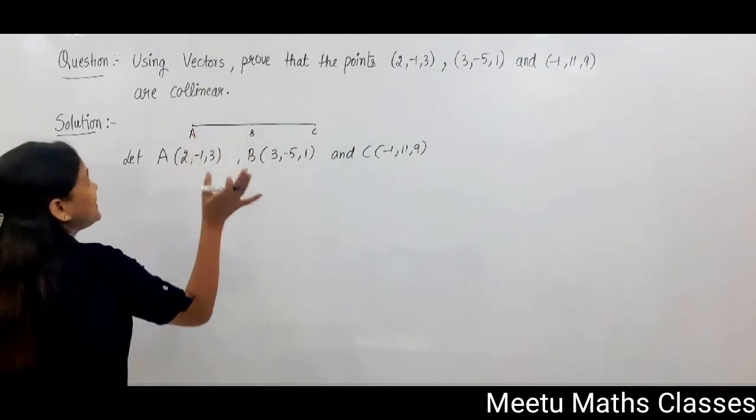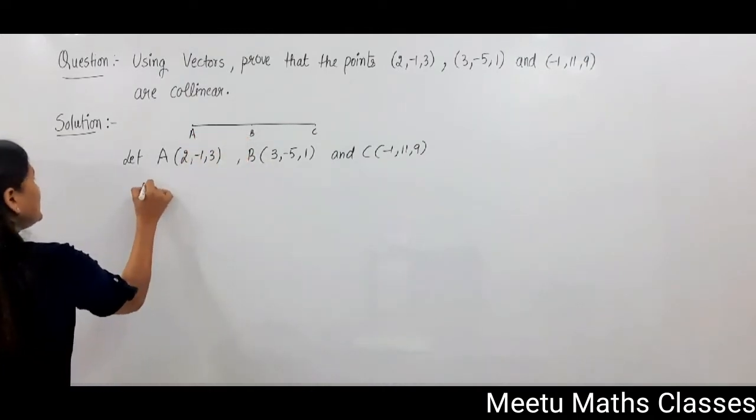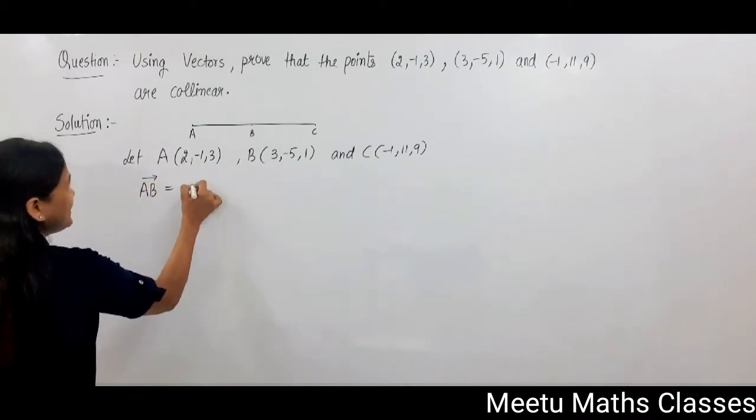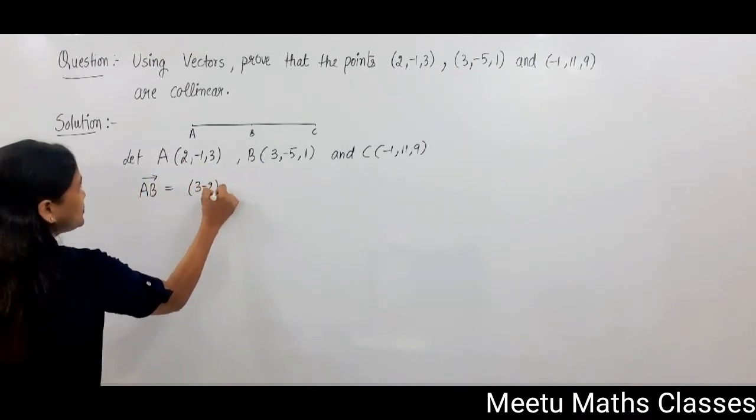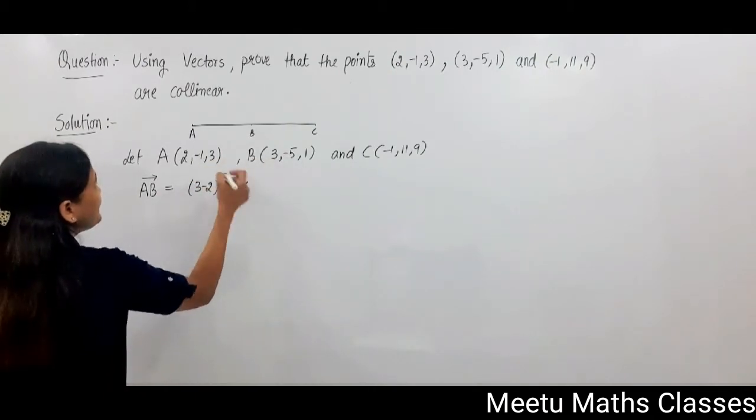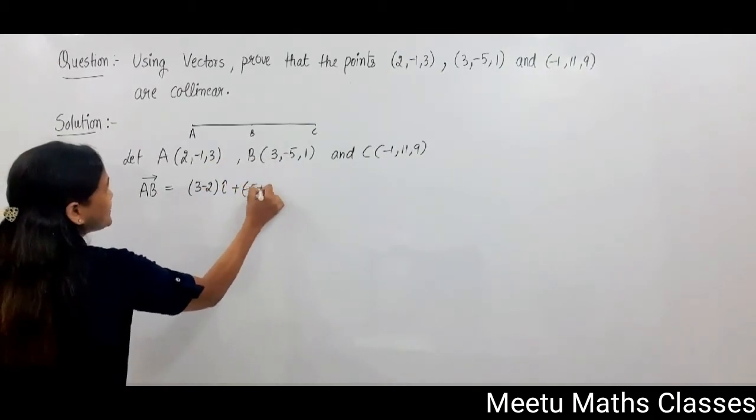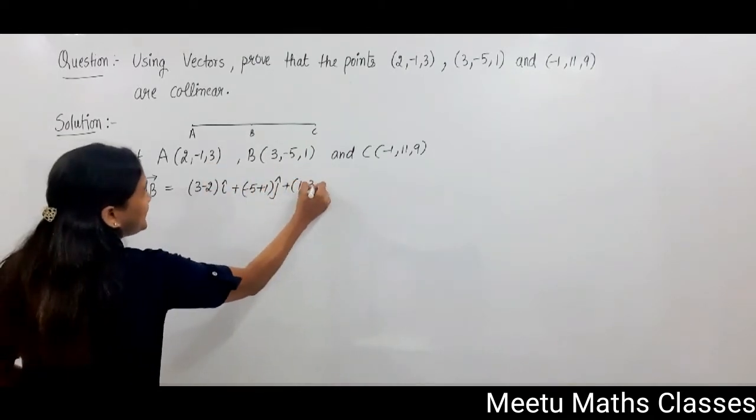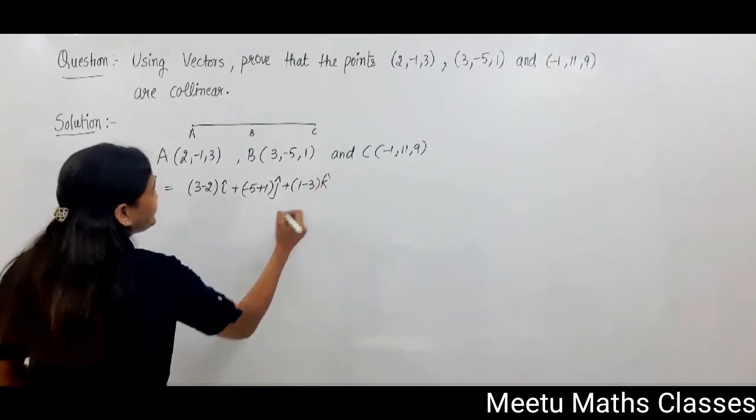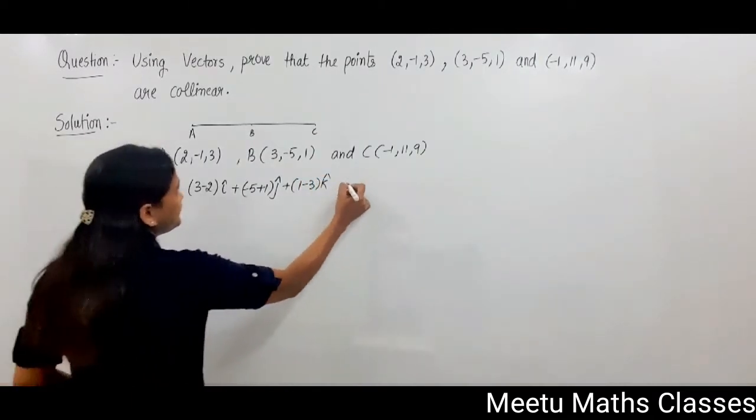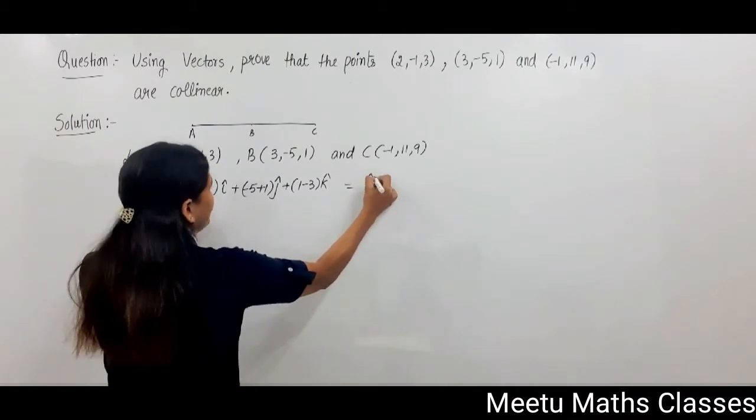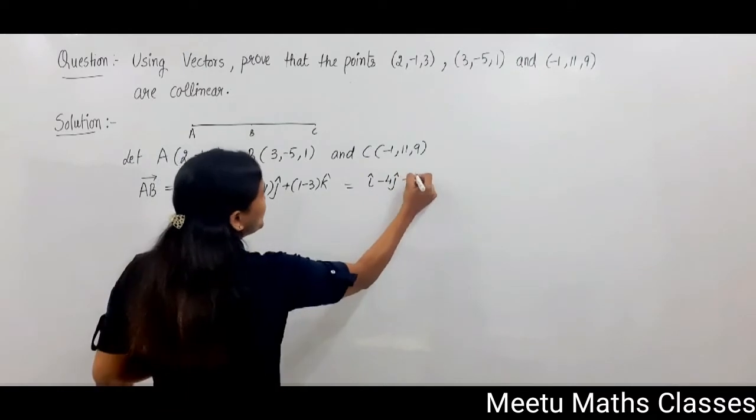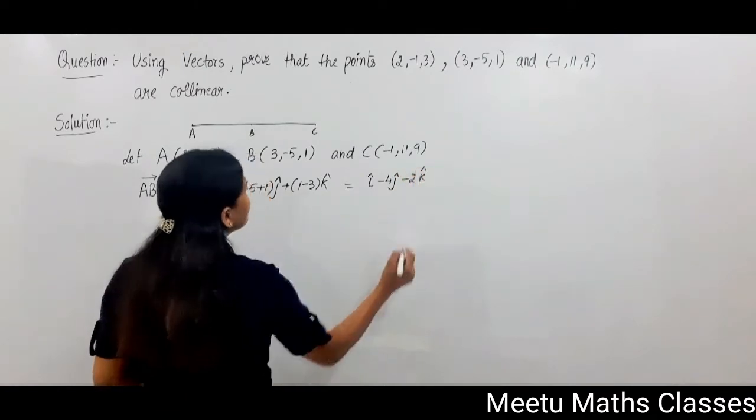Now to find the length of AB we are going to first find out vector AB, and vector AB is B minus A, that is (3-2)i plus (-5+1)j plus (1-3)k, and that equals i - 4j - 2k. This is AB vector.